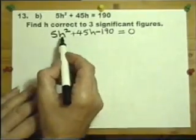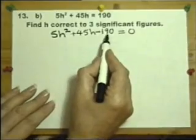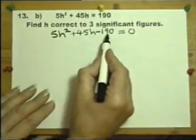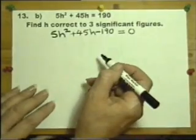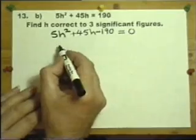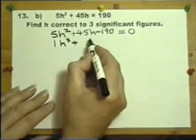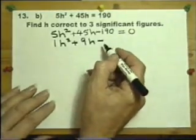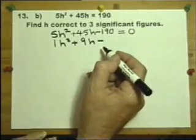Now you don't have to do this but if you notice there is a common factor at each of these numbers: five, 45 and 190 divided by five. And if you have a common factor it does make the work a little bit easier if you divide by. So five into five goes once, five into 45 goes nine, and five into 190, what does that go? 38.